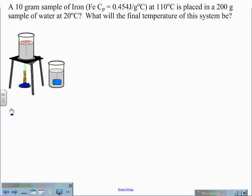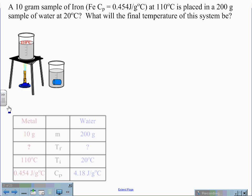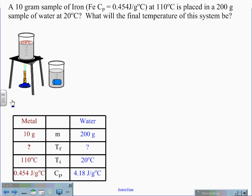So we are going to create a data table of the information. The metal, which is 10 grams, has a final temperature that we are looking for, a starting temperature of 110 degrees Celsius, and a specific heat CP of 0.454 joules per gram degrees Celsius. Water is 200 grams. The final temperature will be the same as the final temperature of the metal. It has a 20 degrees Celsius starting temperature, and the CP for water at 20 degrees Celsius is 4.18 joules per gram degrees Celsius.